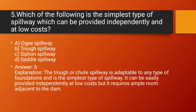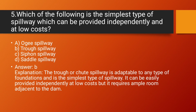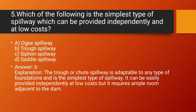Question number 5: Which of the following is the simplest type of spillway which can be provided independently and at low cost? Option A: Ogee spillway. Option B: Trough spillway. Option C: Siphon spillway. Option D: Saddle spillway. Answer: Trough spillway. Explanation: The trough or chute spillway is adaptable to any type of foundation and is the simplest type of spillway. It can be easily provided independently at low cost, but it requires ample room adjacent to the dam.